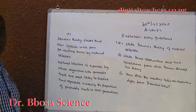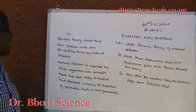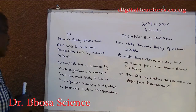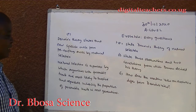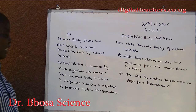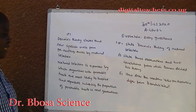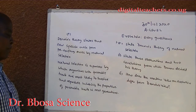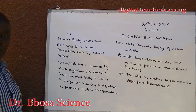A. Darwin's theory states that new species arise from pre-existing ones by natural selection. Natural selection is the process by which organisms with favorable traits are most likely to survive and reproduce, increasing the proportion of favorable traits in the next generation.